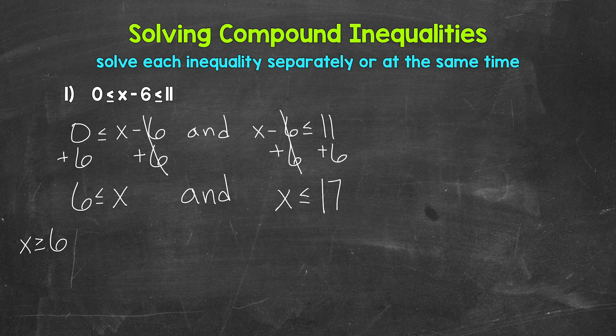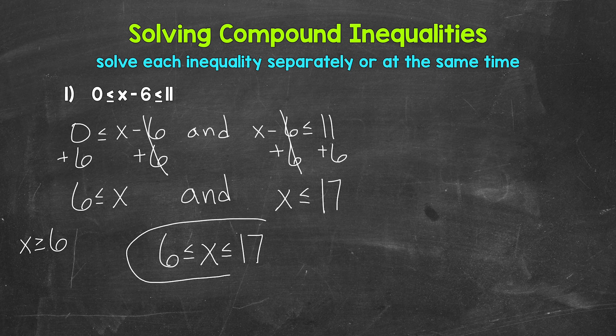Now we can combine these and write this compound inequality without the word AND. So we have x is greater than or equal to 6 and less than or equal to 17. X has to satisfy both. Remember, a solution of a compound inequality involving AND is any number that makes both inequalities true — it has to work for both.